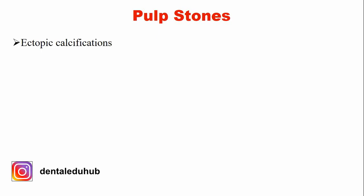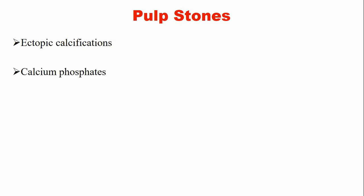What are pulp stones? Pulp stones are basically ectopic or abnormal calcifications within the dental pulp. These calcifications comprise of calcium phosphates and have a composition that closely resembles dentine. The pulp stones may be single or multiple.